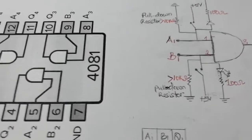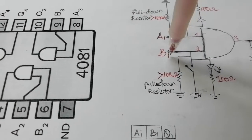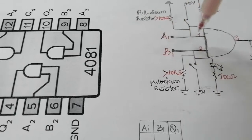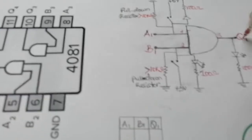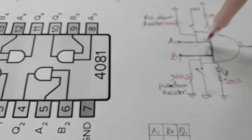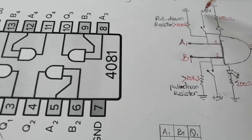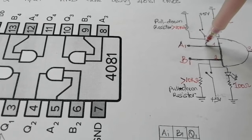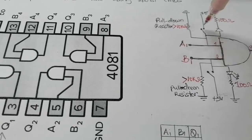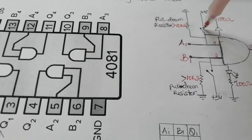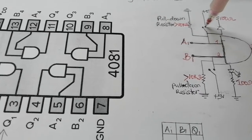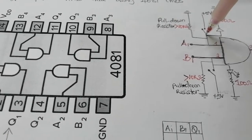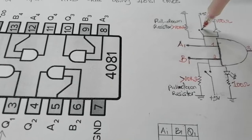In this example I'm using A1 as my first input and B1 as my second input — that's A1 on pin one, B1 on pin two, and Q1 on pin three. I'm powering pin one with a push button — you can use a switch as well — giving it five volts.